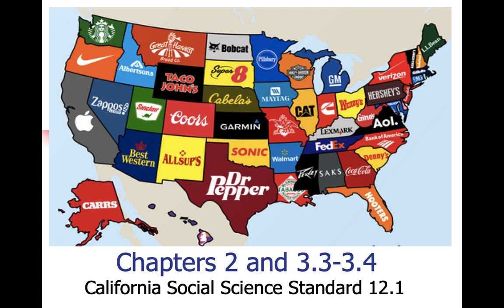We're going to look at what are called economic systems. When you look at a country like the Russian Federation, the People's Republic of China, or even Great Britain now that it's leaving the European Union, these are nation states that make choices about how they're going to set up their economy. The picture you're looking at shows the most profitable business that originated in each state — things like Dr Pepper, Hershey's, Coca-Cola, Apple, Nike, Starbucks — all based on choices.